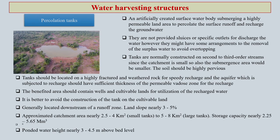At the rural or village community level, one of the most common water harvesting structures is the percolation tank or percolation pond. This is an artificially created surface water body which is highly permeable and should allow water to percolate downward to recharge the groundwater — that is the main purpose of a percolation pond.